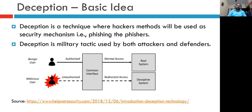The diagram here shows how deception works. There are two types of users: benign and malicious. Both are presented with a common user interface, and based on their activity they are classified. If classified as a benign user, they are given access to the real system. If classified as a malicious or unauthorized user, they are redirected to the deceptive system.